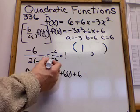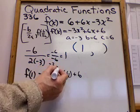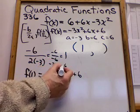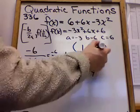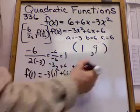1 squared is 1 times 3 is minus 3 plus 6 is 3 plus another 6 is 9. So the vertex is 1, 9.